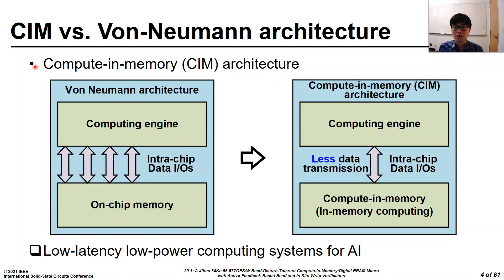A computing memory architecture has gained importance in achieving high-throughput, low-latency AI systems. A traditional von Neumann architecture suffers from the latency and power dissipation incurred by off-chip data communications. Thus, CIM architecture has emerged to surmount the aforementioned problems by conducting computation in memory. By employing CIM architectures, low-latency, energy-efficient computing systems can be realized.